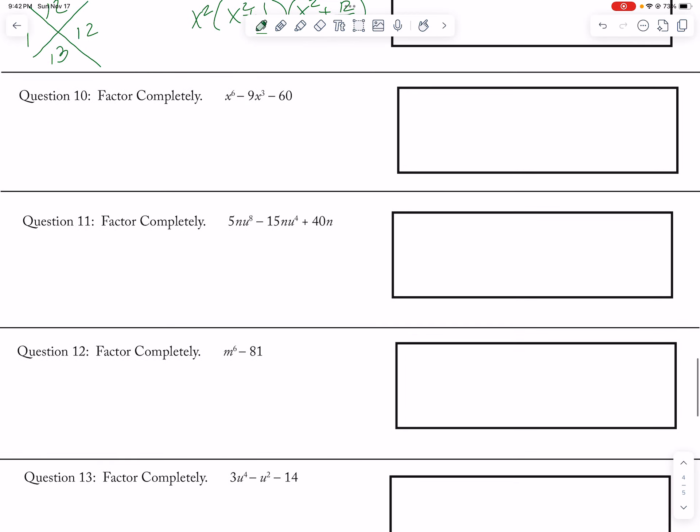Alright, and then here I can factor out a 5n, so that leaves me with u to the 8 minus 3u to the 4th and then plus 8. And I can't factor any more than that because factors of 8 are 1 and 8 and 2 and 4. So 5n, u to the 8 minus 3u to the 4th plus 8.